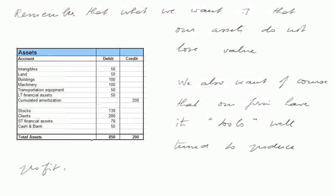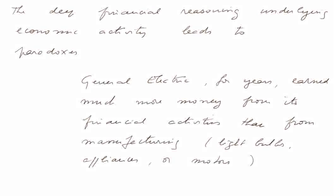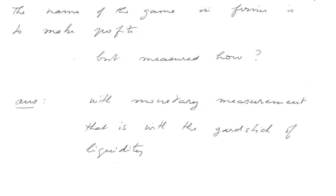In other words, we are in an economy where everything is measured with the yardstick of money. The deep financial reasoning underlying economic activity leads to paradoxes. General Electric, for years, earned much more money from its financial activities than from manufacturing — like bulbs, appliances, or electric motors. So, to finish up, the name of the game in running firms is to make profits — but measured how? Of course, it's also to produce value, to produce jobs, to earn for a community, etc. But let's start from this conventional way to look at firms.